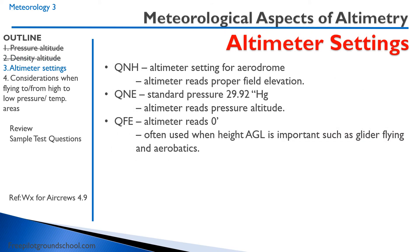There are a number of different altimeter settings we can use. These terms are still on the books, but you don't hear many people use them — unfortunately, you do need to know them. QNH is the altimeter setting for the aerodrome; the altimeter will read the proper field elevation. QNE is the altimeter setting at 29.92 inches of mercury, so the altimeter reads the pressure altitude. QFE is when the altimeter reads zero — we look at what the altimeter setting is when zero is set. This is important when flying gliders or aerobatics, where everything is relative to height above the ground. If we do aerobatics, how high we are above sea level isn't that important — we just want to make sure we don't hit the ground at the bottom of our loop.